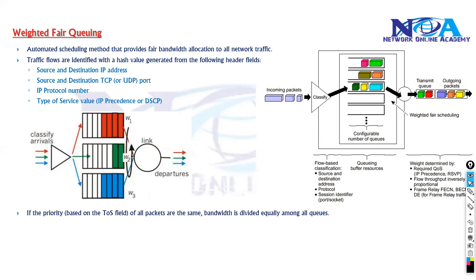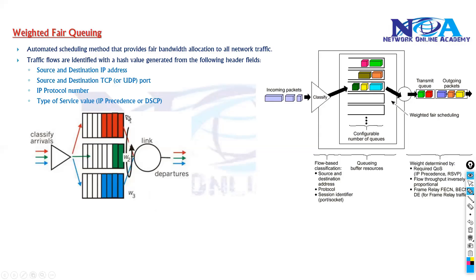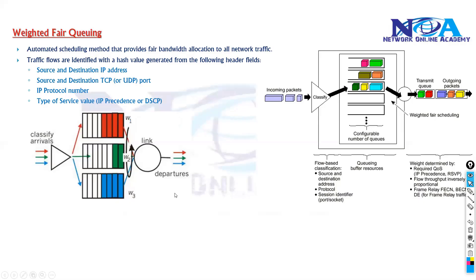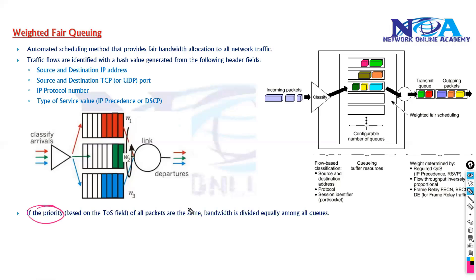Now, how exactly does it work? Traffic with the same flow is placed in the same queue. It generally supports a maximum of 256 queues. If all packets have the same priority field, same DSCP value, or same precedence marking values, then it will automatically divide the bandwidth equally among all the queues.